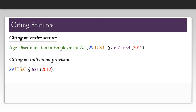Now that we've found all the elements we need, we can create our citation by plugging each of those elements into the format we laid out earlier. Note that the difference between citing an entire statute and citing an individual provision is that when you cite an individual provision, you do not include the official name of the act, and you only include the specific section that you're citing rather than the span of sections.